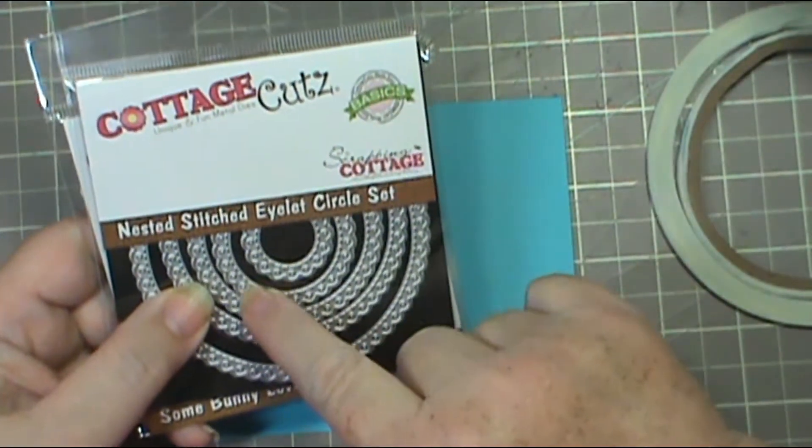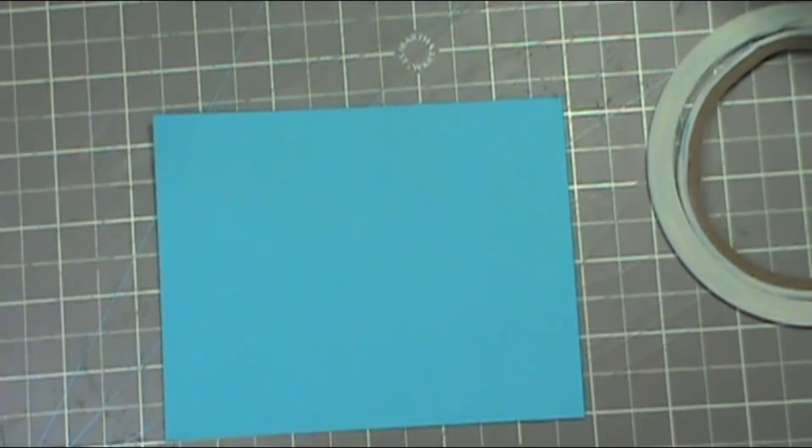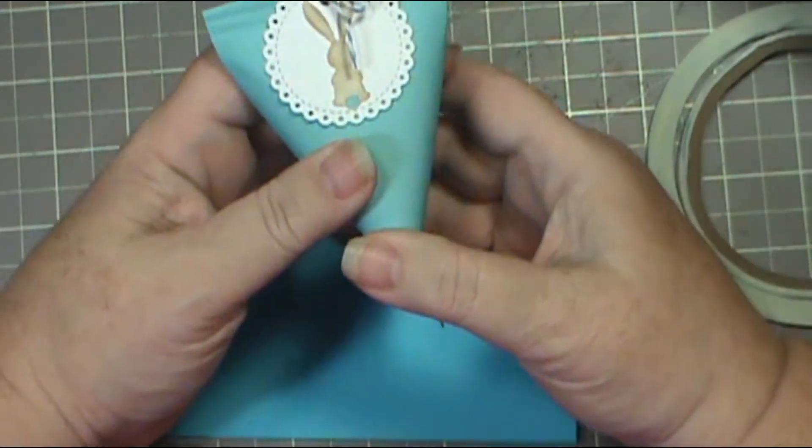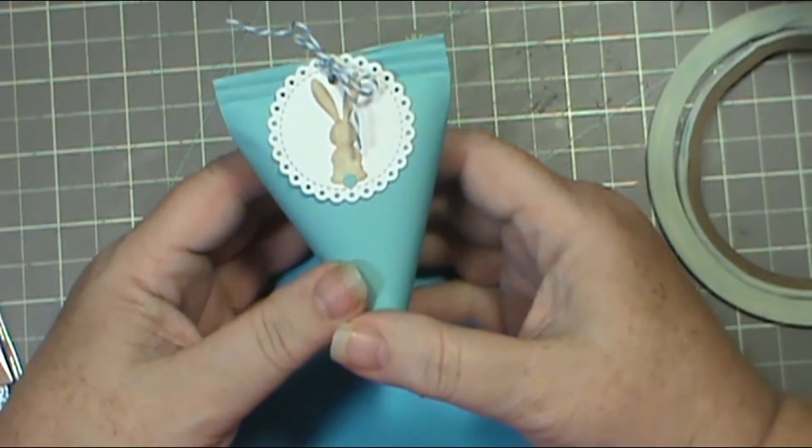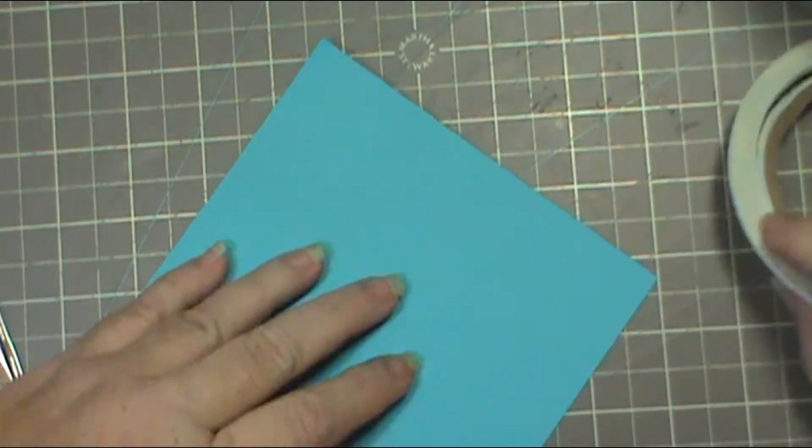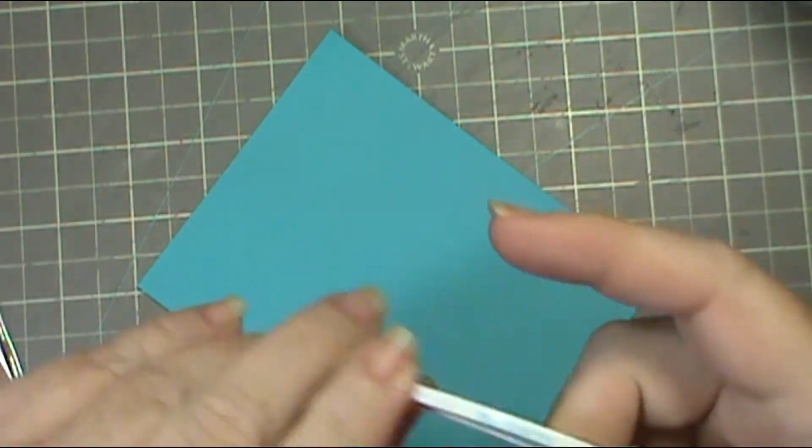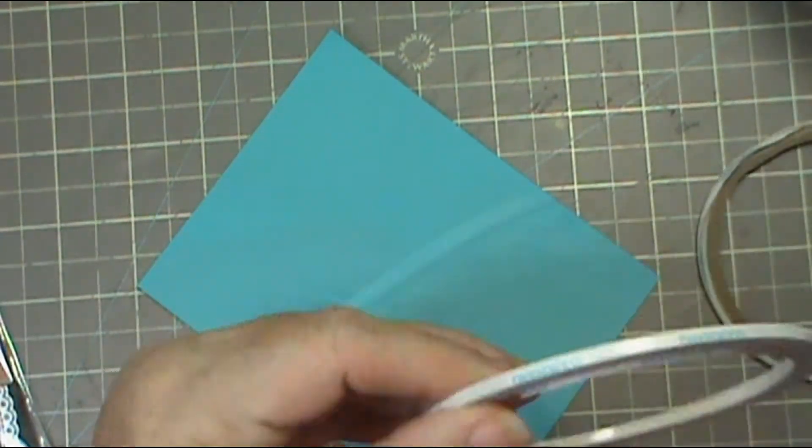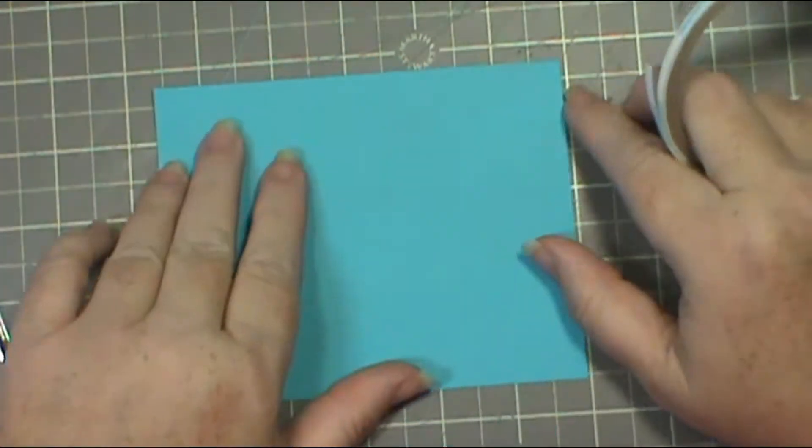I use the second from the smallest, and what we're going to make are these little sour cream containers. I've actually made a total of 22 of them to give to the police department here in town. You cut your paper four and a quarter by five and a half.